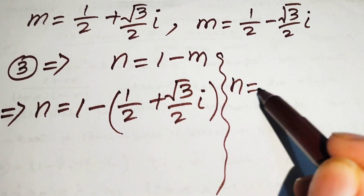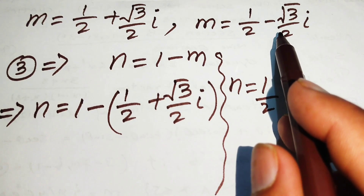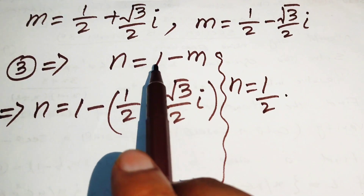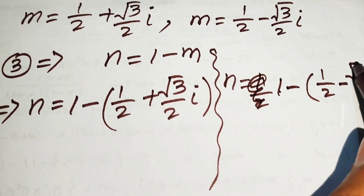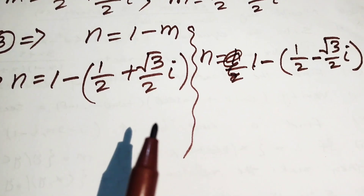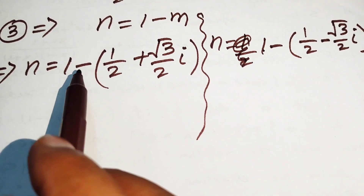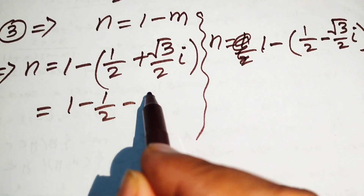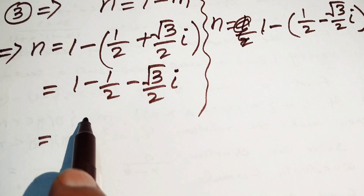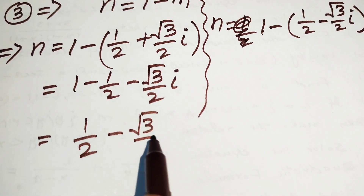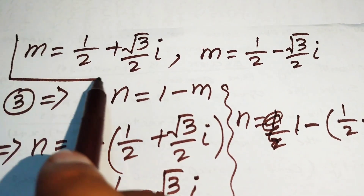For Case 1, n equals to 1 minus (1/2 plus (√3/2)i). Distributing the minus sign: 1 minus 1/2 becomes 1/2, minus (√3/2)i. So n equals to 1/2 minus (√3/2)i when m equals to 1/2 plus (√3/2)i.